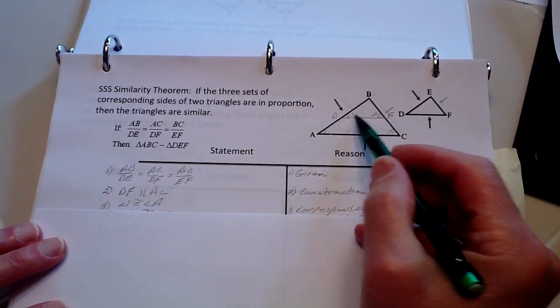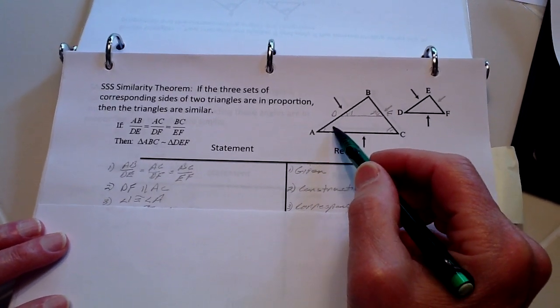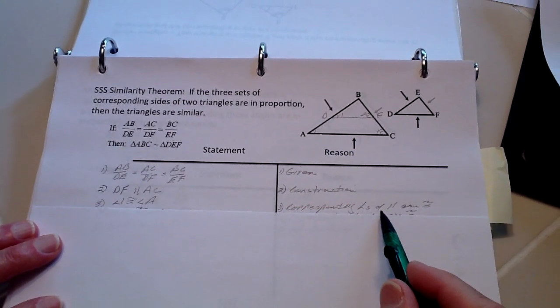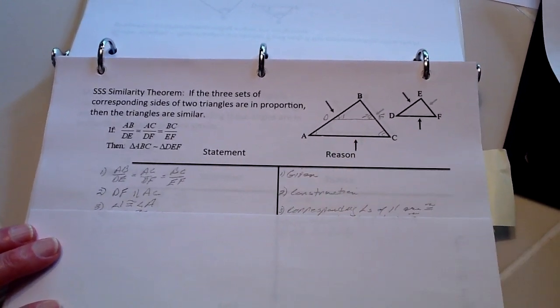Because of that, angle one and angle A are going to be congruent because they are corresponding angles of parallel lines. Therefore they are congruent.